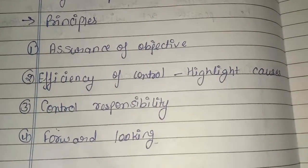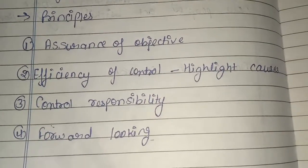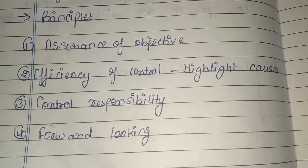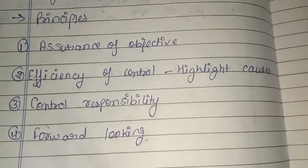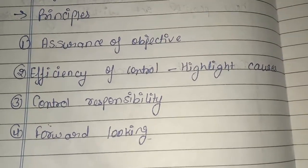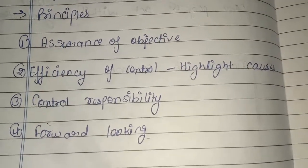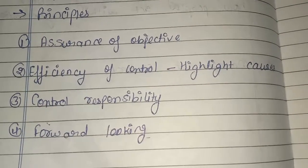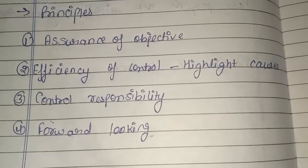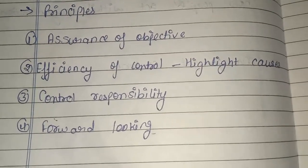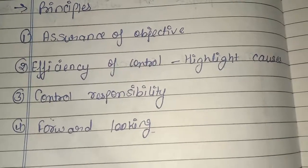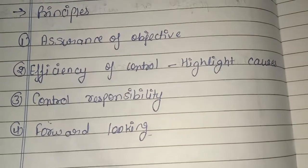दूसरा principle है efficiency of control। Efficiency of control में हम यह देखते हैं कि जो हमारे causes होते हैं — मतलब कि अगर कोई भी problem organization के अंदर आ रही है — तो उन causes को highlight करते हैं ताकि हमारी control की efficiency और अच्छे से improve हो सके। Management control इसलिए किया जाता है ताकि हम अपने organization के goals और objectives achieve कर सकें।